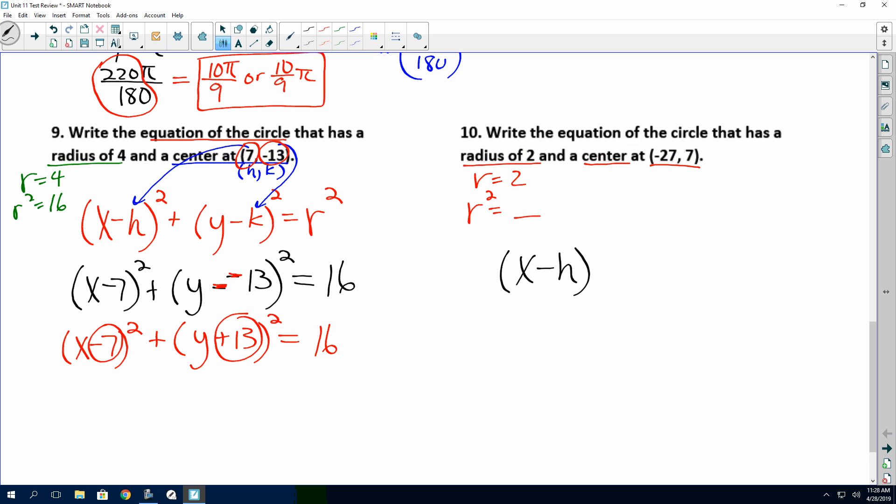And you're just plugging it into your form: x minus h parenthesis squared plus y minus k parenthesis squared equals radius squared, not C squared. I apologize on that.